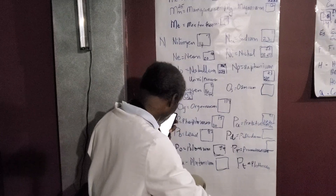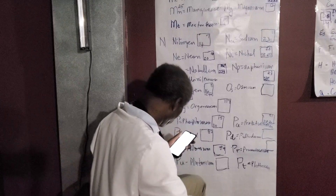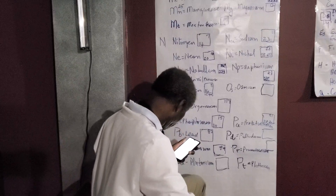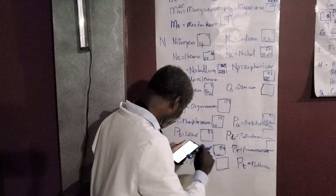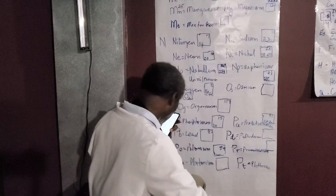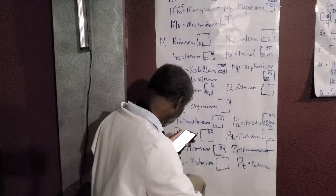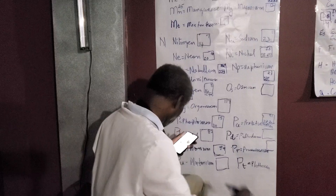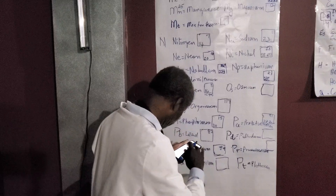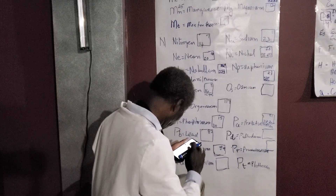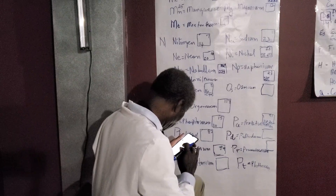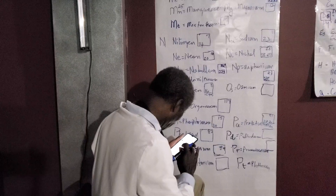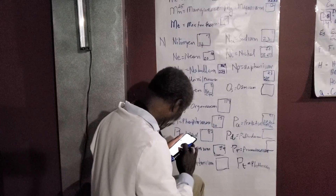Atomic number for lead is 82. According to PubChem, lead is a chemical element with symbol PB and atomic number 82. The atomic mass is 207.2.